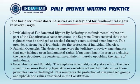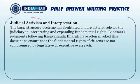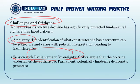The basic structure doctrine will serve as a safeguard for fundamental rights in several ways. We should have judicial oversight, welfare, social justice and equality. For judicial activism and interpretation, you will be able to make a point. Then there are challenges and criticisms — there are ambiguities and tensions between the doctrine and parliamentary sovereignty.